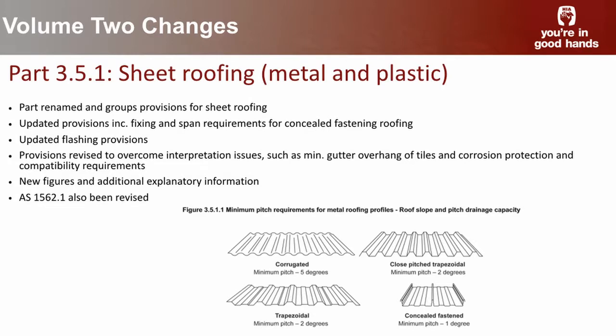Moving into Part 3.5, which has had a significant overhaul. Part 3.5 deals with roof cladding, gutters and downpipes, and wall cladding. The new part has been split more logically: 3.5.1 now deals with sheet roofing — both metal and plastic; 3.5.2 with roof tiles and shingles; 3.5.3 with gutters and downpipes; 3.5.4 with wall cladding; and 3.5.5 with metal wall cladding. Previously, one clause for sheet roofing requirements was spread over 16 pages with no logical flow.